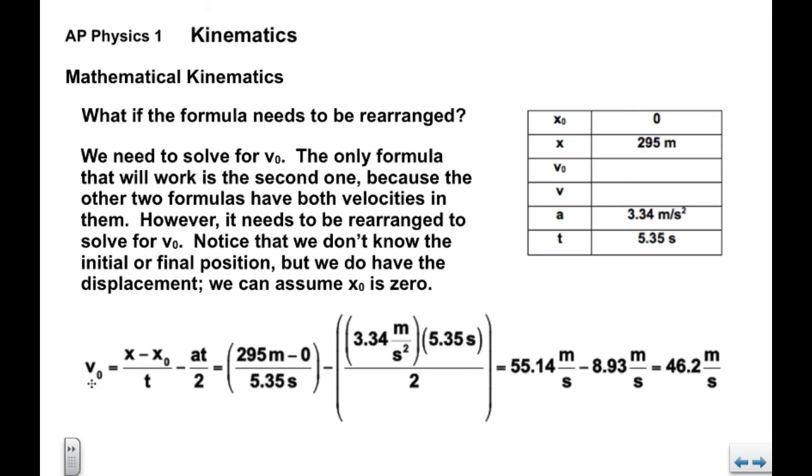Using the rearranged formula for V naught, X minus X naught over T minus AT over 2. We're going to substitute the data in. Again we have to simplify this. We simplify this expression first. We end up with units of meters per second which we expect for velocity. We have to subtract 0 here and then divide by 5.35. We end up with a final answer of 46.2 meters per second for the initial velocity.